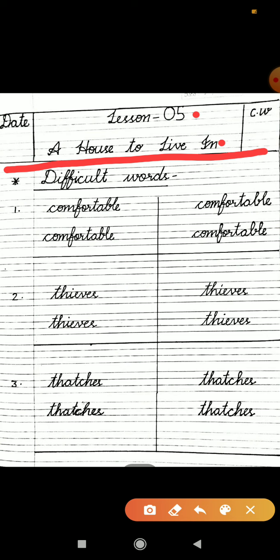First of all, you will make a two-line headline. In the first line you will write lesson number, lesson 5. In the second line you will write the name of the lesson, A House to Live In. On one side you will write the date and on one side you will write CW.